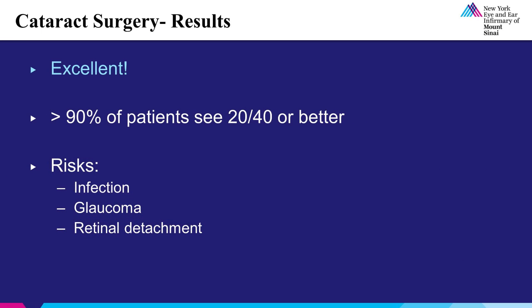The outcome of most cataract surgeries is excellent, with over 90% of patients seeing 20/40 or better, as long as there are no other eye diseases present. There are, however, risks to consider, as with any kind of surgery. Though rare, these risks include infection, glaucoma, and retinal detachment, to name a few. A detailed discussion regarding specific risks and benefits should take place between the patient and his or her ophthalmologist prior to cataract surgery.